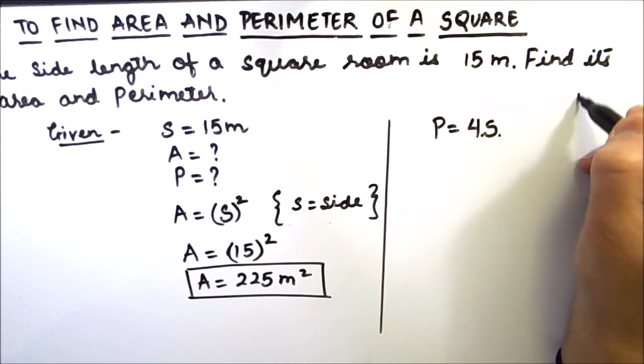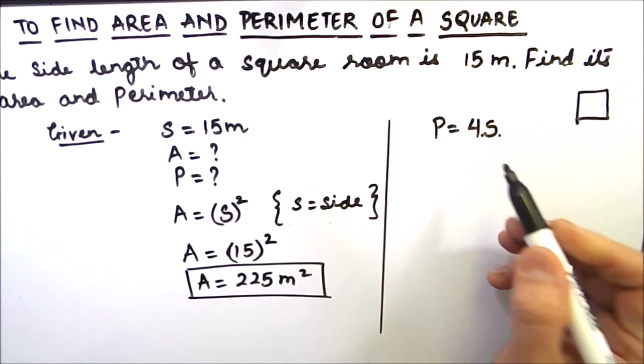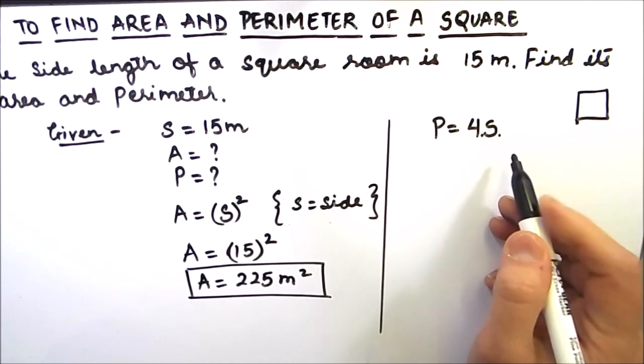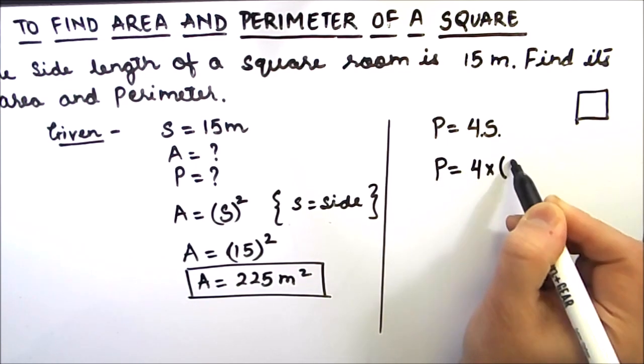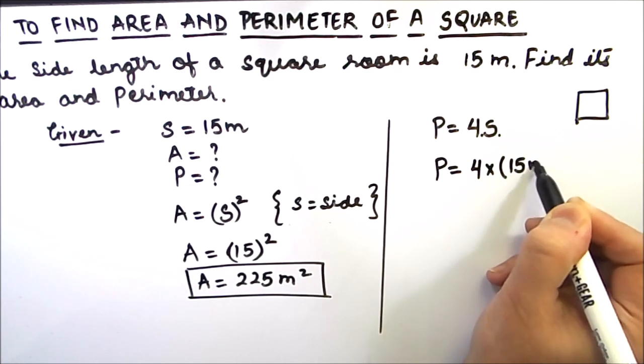Because there are 4 sides in a square and perimeter is sum of all the sides of the figure. So that will be 4S for square. So we will find the perimeter by multiplying 4 by the side length, which is 15 meter.